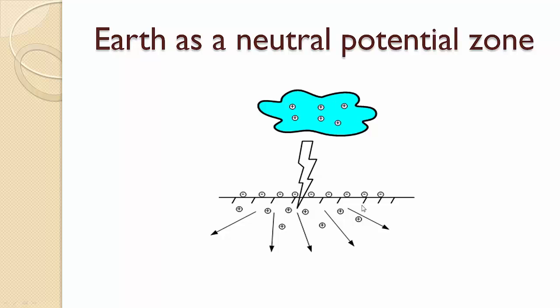So it is not possible to charge up the Earth's surface. So that means at any two point of the Earth will be at the same potential, which also is the neutral potential.